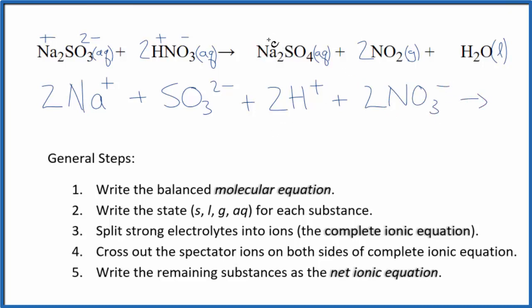For the products, sodium is one plus. The whole sulfate ion, another good one to remember, is two minus. So we have two sodium ions again, 2Na+, just like in the reactants, and the sulfate ion, SO4^2-. For gases and liquids, we do not split those apart. We have 2NO2, nitrogen dioxide, plus water, H2O. This is our complete ionic equation.